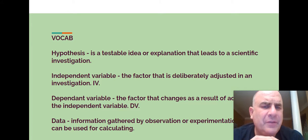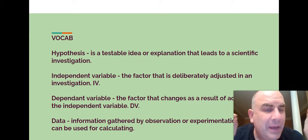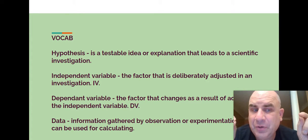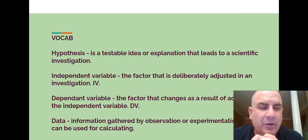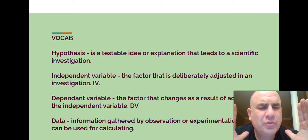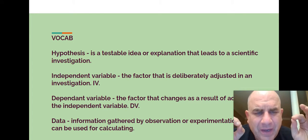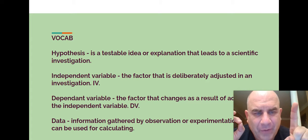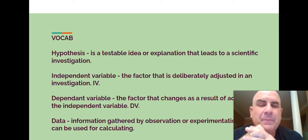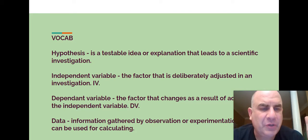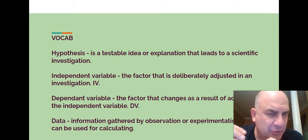Independent variable. The factor that is deliberately adjusted in an investigation, it is called the IV. Next time we meet, we are going to watch someone do an awesome science experiment, and I'm going to show you that independent variable. In an experiment, you try to keep everything the same, except for one thing, because that's what you're testing. That's the independent variable. The dependent variable is what you measure. The independent variable is what you change. The dependent variable is what you measure.